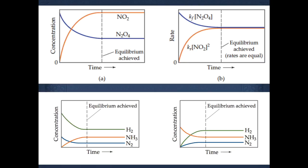These two graphs show that it doesn't matter whether you start with reactants or products — you can still reach equilibrium. The graph on the left shows you starting with reactants H₂ and N₂, with NH₃ as the product; the concentration of NH₃ increases until equilibrium is reached, where all three concentrations stop changing. The graph on the right shows starting with only the product and no reactant, yet still reaching that same equilibrium — as long as you have a closed system.